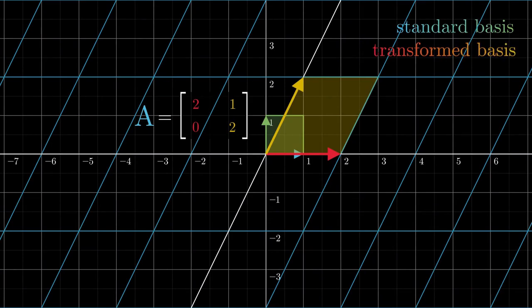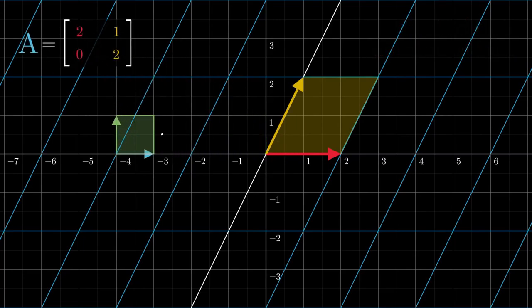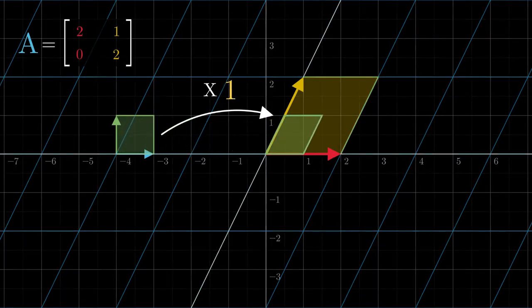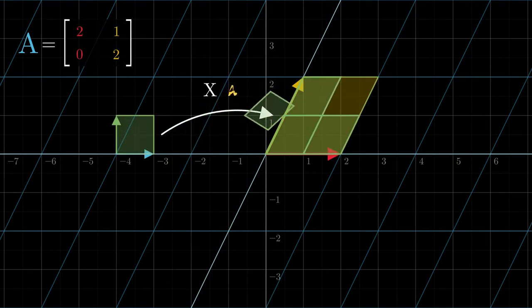By comparing the areas of the parallelogram spanned out by our standard basis vectors and that of the transformed basis vectors, we see that the transformation scales areas. The exact factor by which a 2×2 transformation scales areas of space is said to be its determinant. In this case, it's easy to see that the transformation scales areas by a factor of 4, which is to say that matrix A has a determinant of 4.